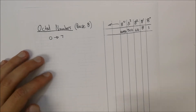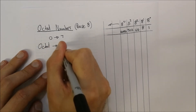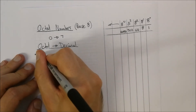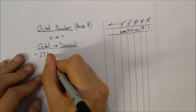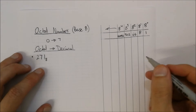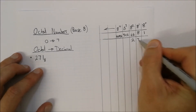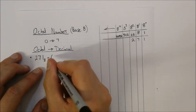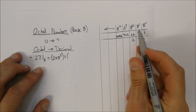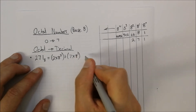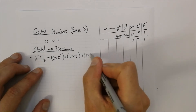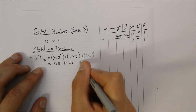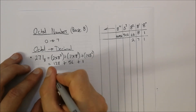The first thing we're going to look at is converting octal numbers to decimal. Let's say we look at the number 271 — that's the octal number. We place it into our table: 2 times 8 to the power of 2, plus 7 times 8 to the power of 1, plus 1 times 8 to the power of 0. That equals 128 plus 56 plus 1, which is equal to 185.